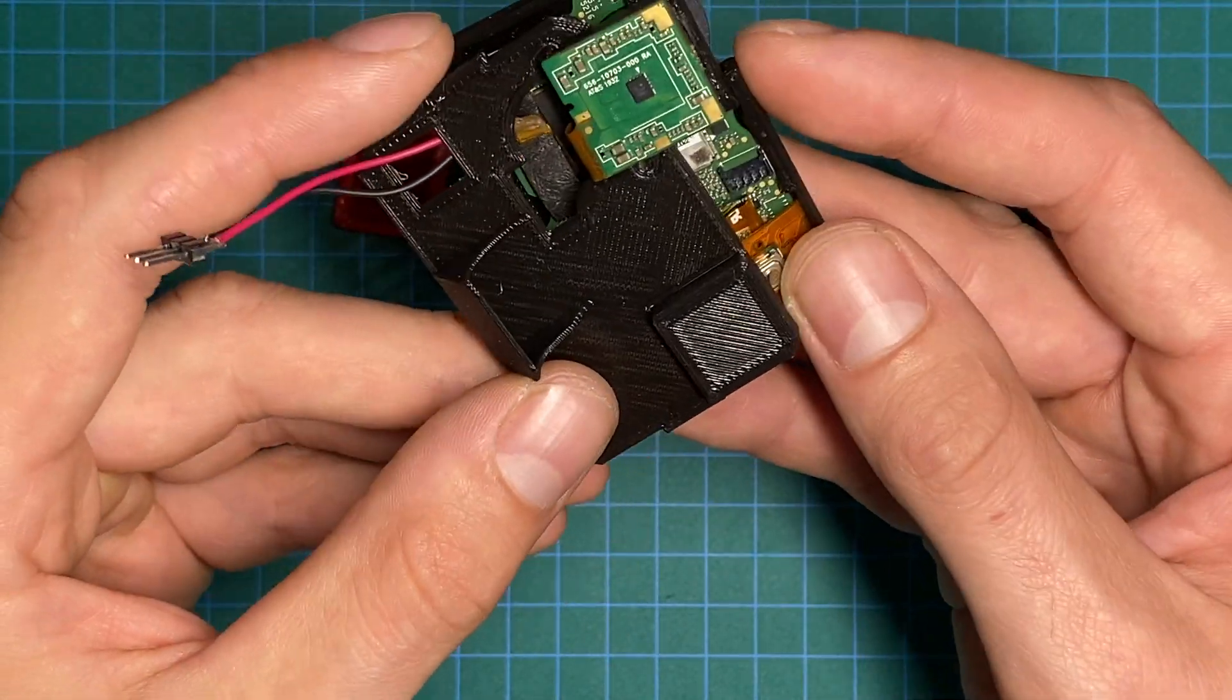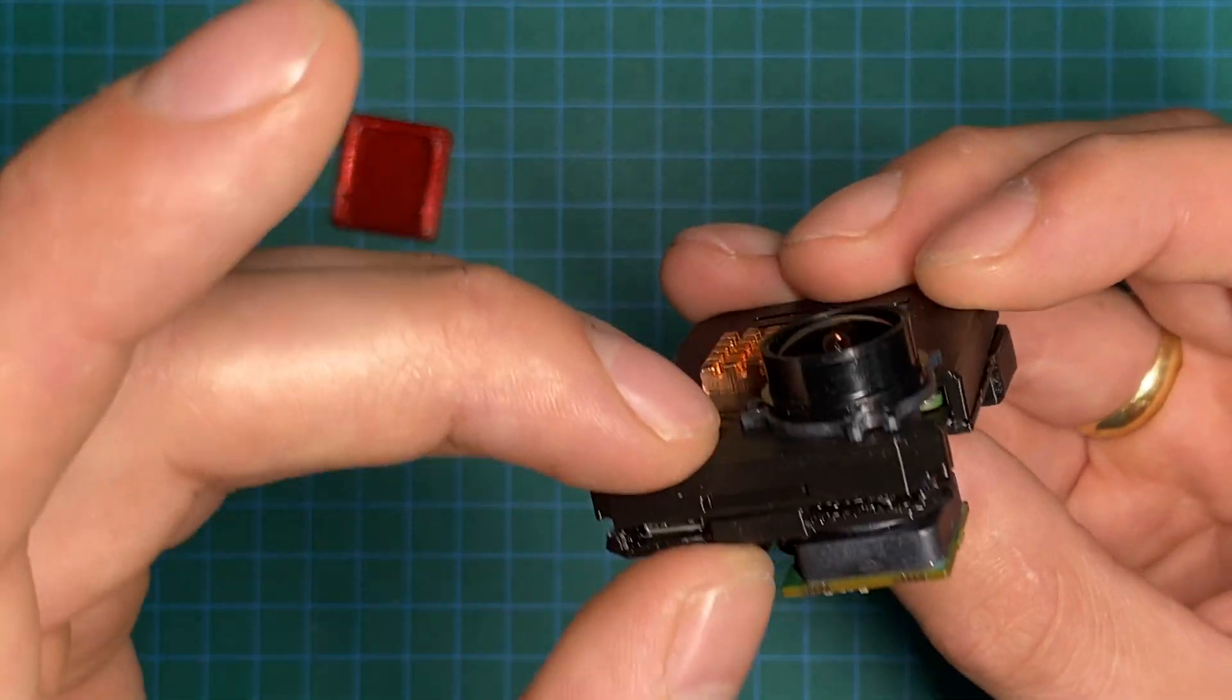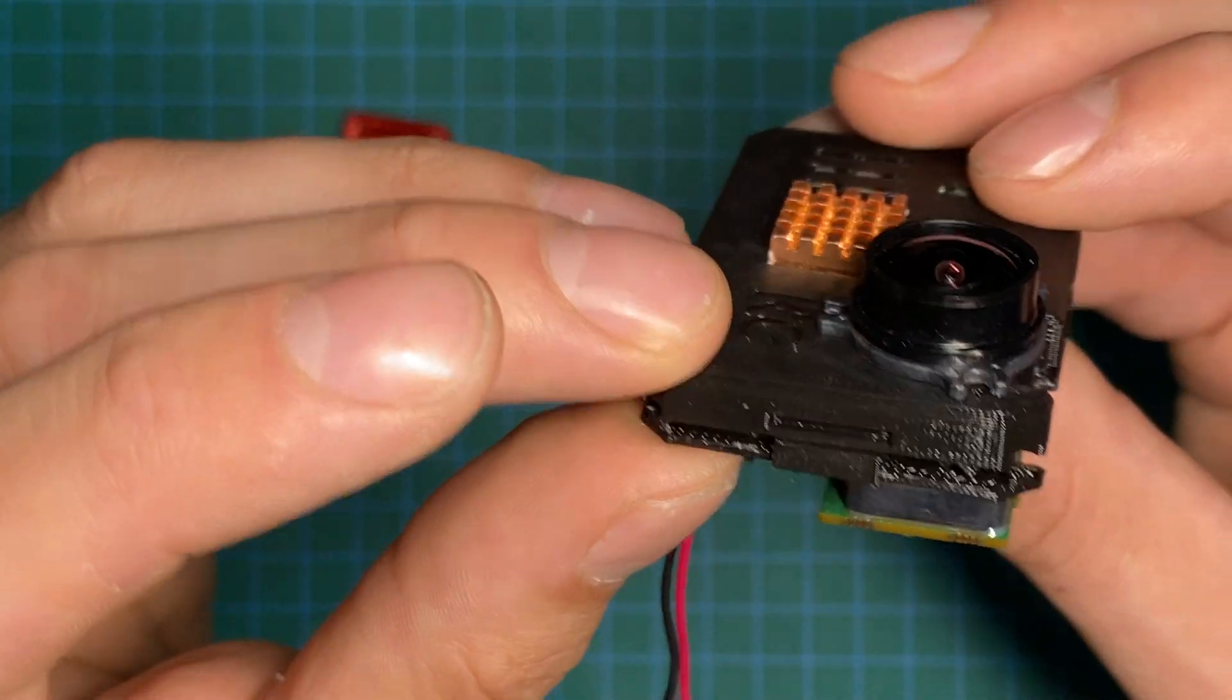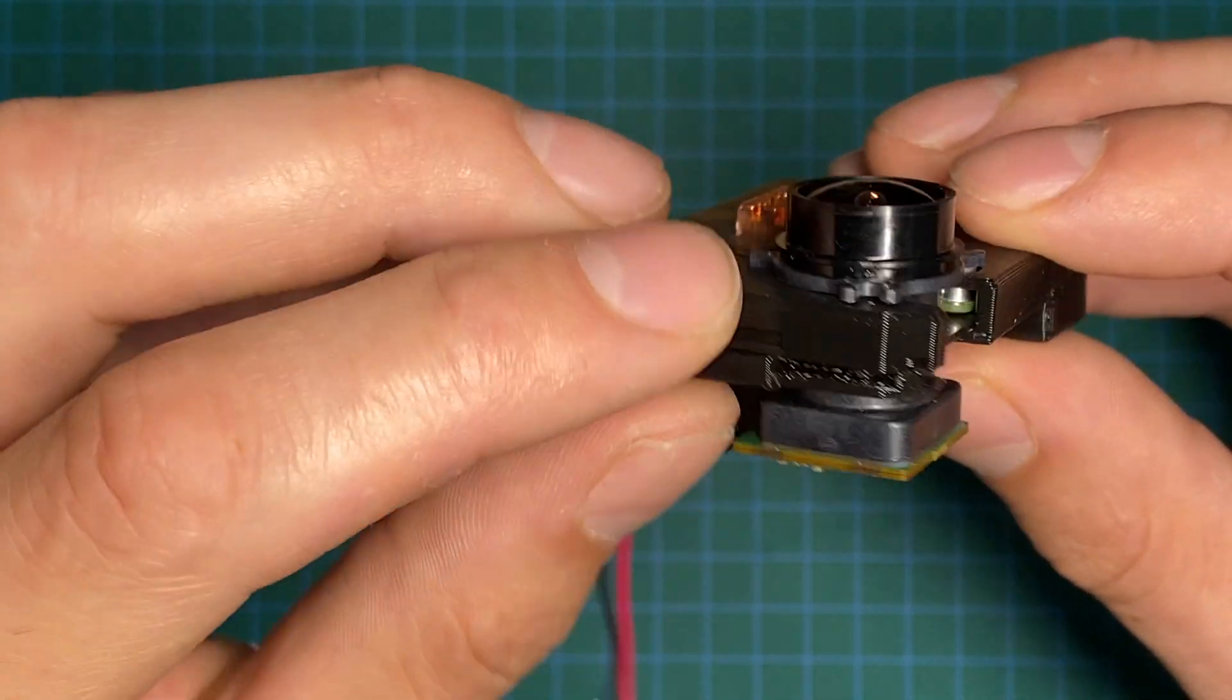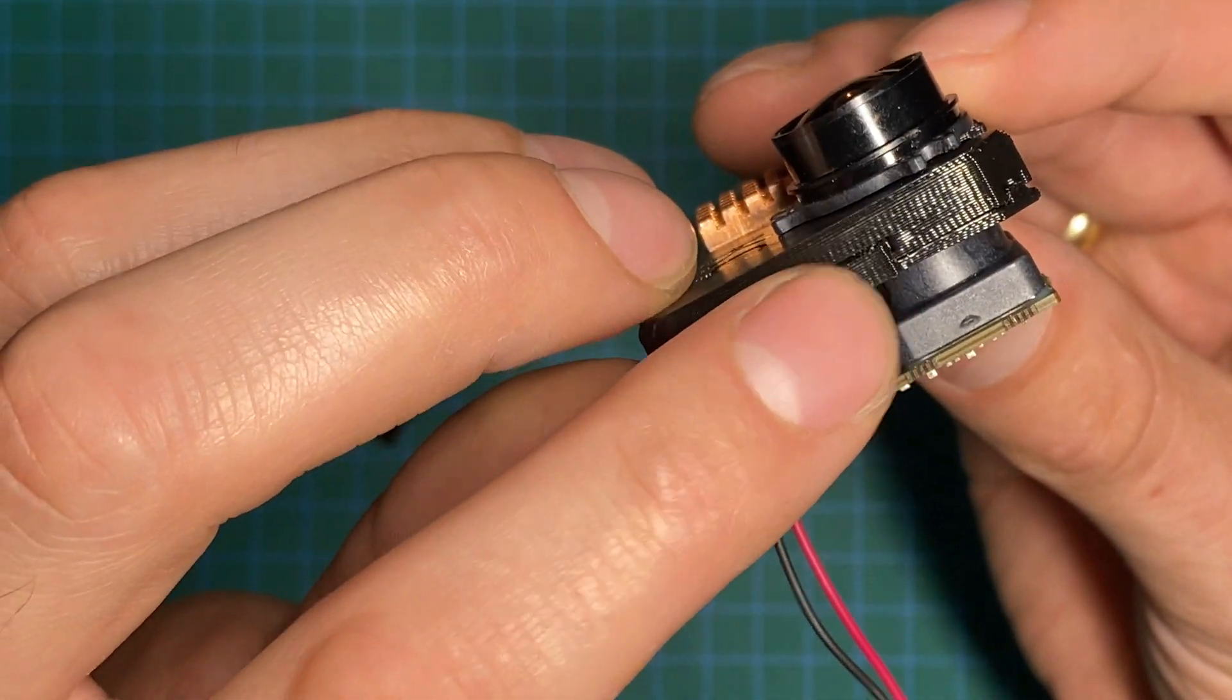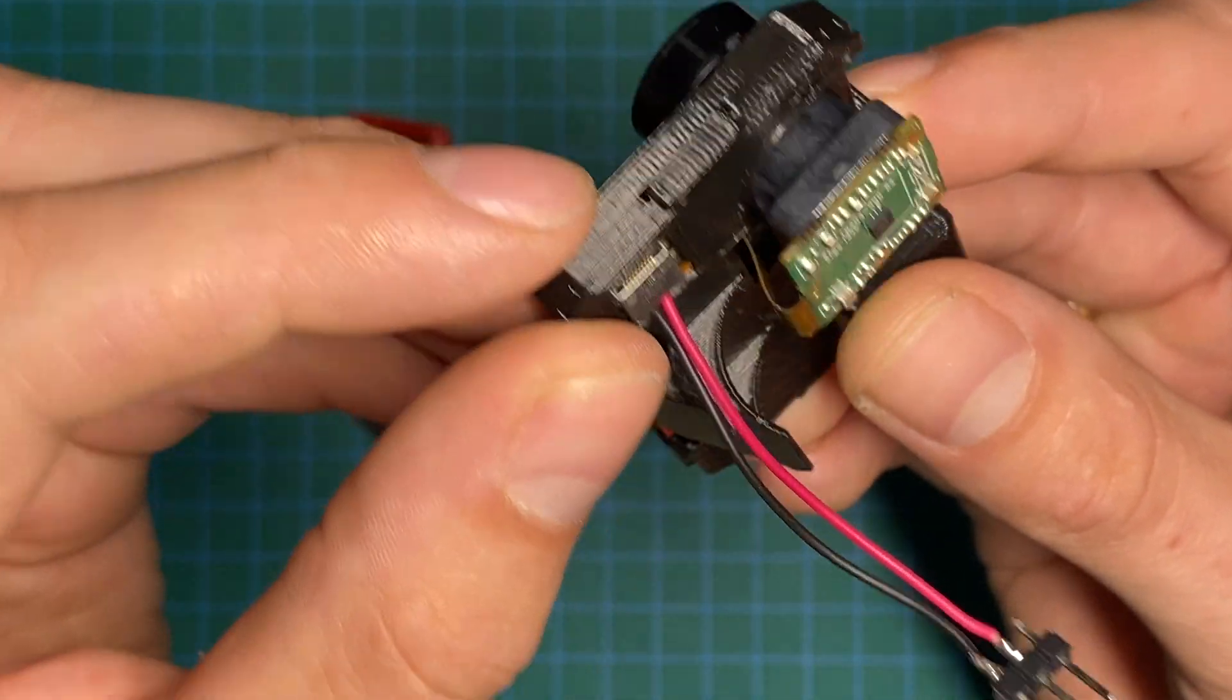And then you can slide this back piece, the back plate, on. And it has some clips on either side. But it also has two guiding pins here. And I recommend starting from this side. Clicking this part in place. Looking that these guiding pins are where they need to be.